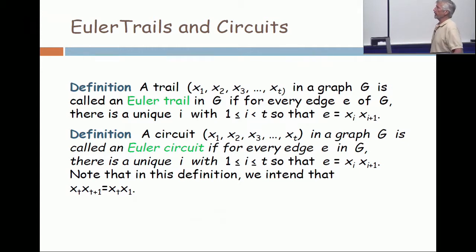So a trail is called an Euler trail if for every edge there is a unique i so that the edge e is the edge xi going to xi+1. So think about inspecting the integrity of the edges in a network. You want to start at some home base and then walk around in the network and physically walk on every edge in the network to check to see that it's functioning properly. But you don't want to walk on the same edge more than once because that's duplicated labor.